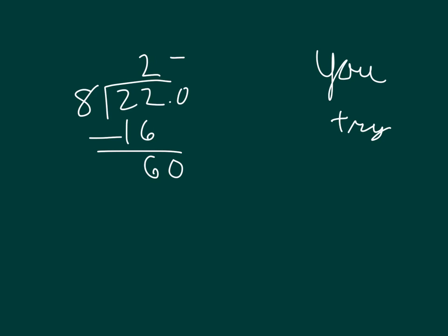60 divided by 8 is 7 because 7 times 8 is 56. 60 minus 56 is 4. Add that 0 to drop a 0. 40 divided by 8 is 5. And then our decimal point comes straight up.